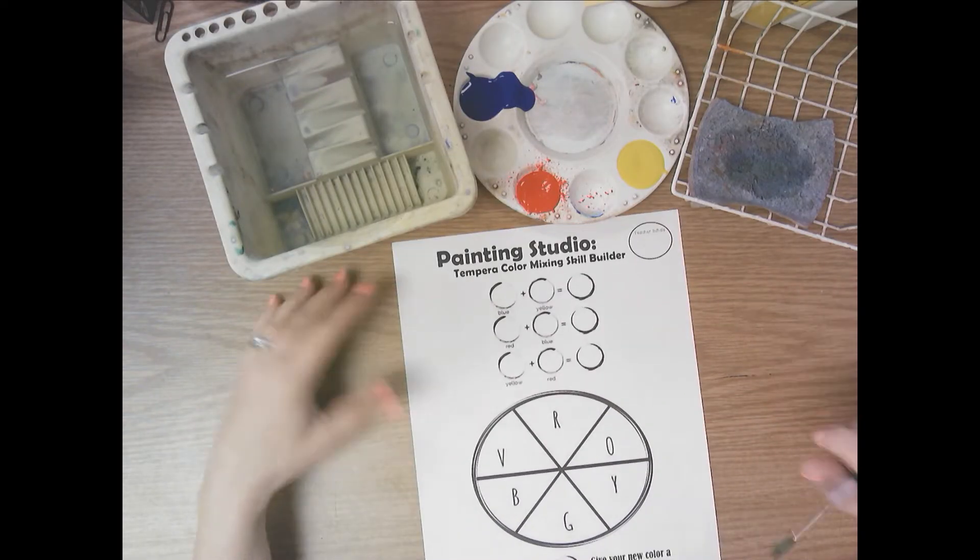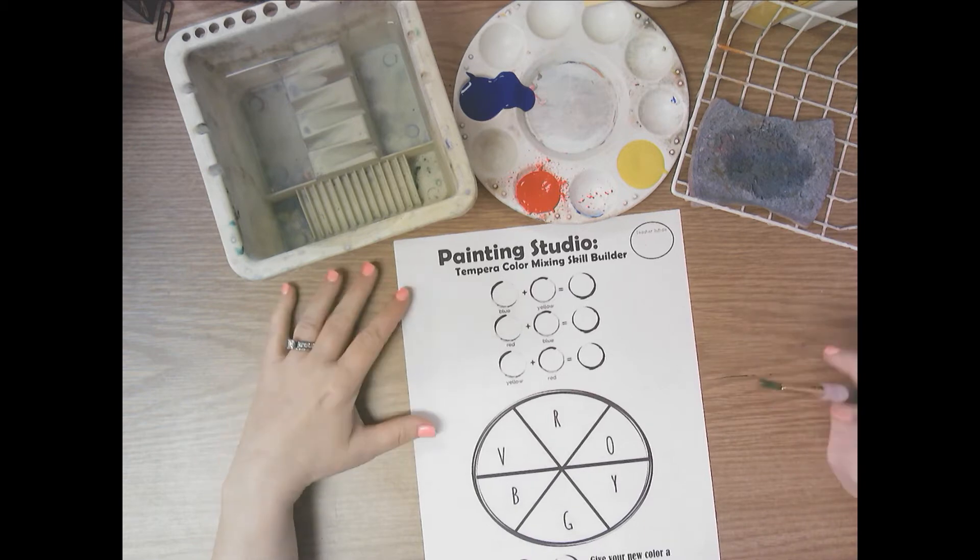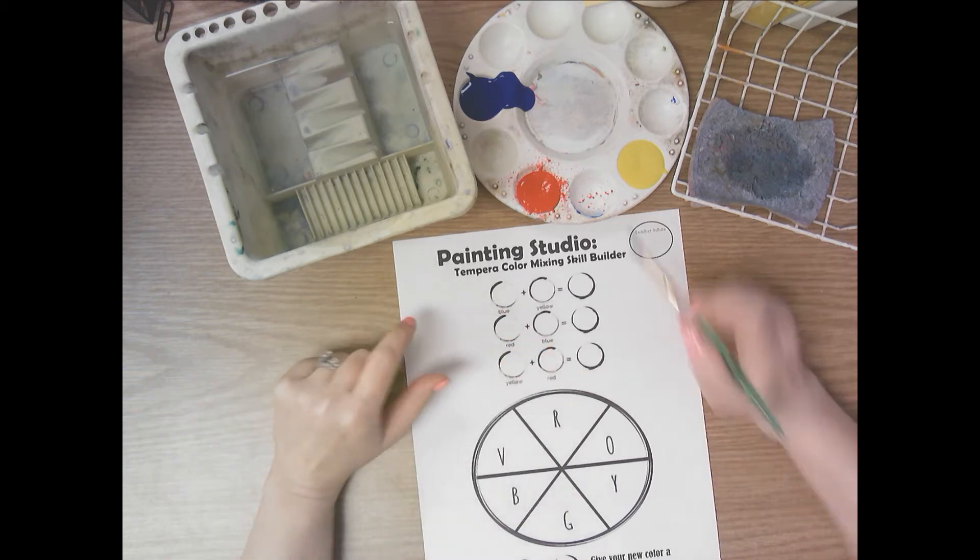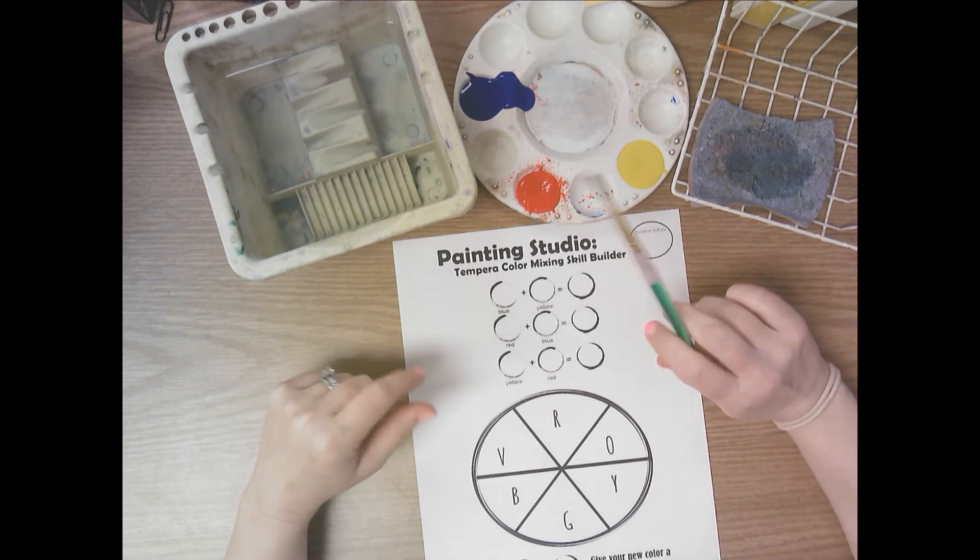Hello, so this is our second Tempera paint skill builder page and we're going to do some color mixing. On your paint tray today you're only going to need the three primary colors: red, yellow, and blue.